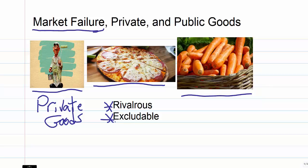Something is non-excludable if we can't force people to pay and they still get the benefits. So these are all examples of private goods, and the market works pretty well for private goods.